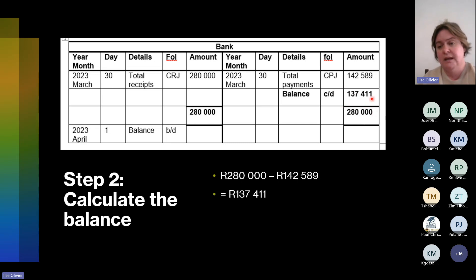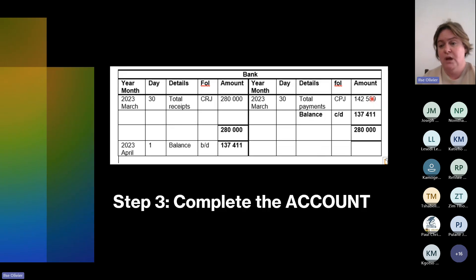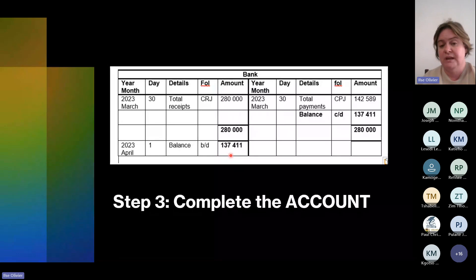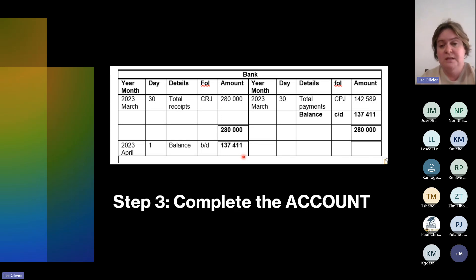Why is it important to calculate the balance? Because your bank account only has that amount available at the beginning of the next month. So you finish your bank account, carry R137,411 down, and write 'balance brought down' — because on the 1st of April you only have R137,411 left. It's like when your mom gives you R10 pocket money and you spend R8 — for the next month you have R2 to add to your new R10 pocket money.